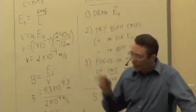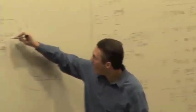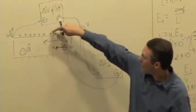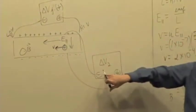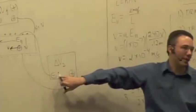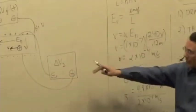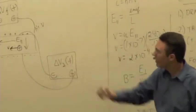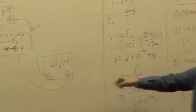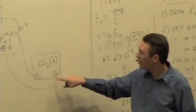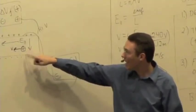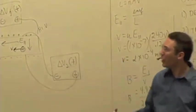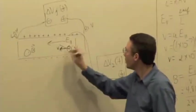No. The electric field in this case would be pointing down, which would mean the top is the higher potential. But the top is connected to the negative terminal of voltmeter 2, and we know voltmeter 2 is reading positive — meaning the positive terminal must be connected to the higher potential. So that case doesn't work. That's ruled out.